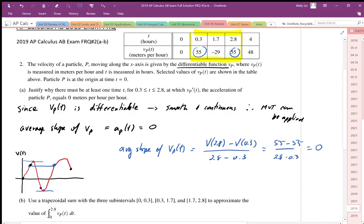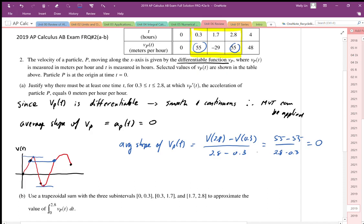So the average slope equals zero. By the Mean Value Theorem, the instantaneous slope, which is acceleration, must also equal zero.